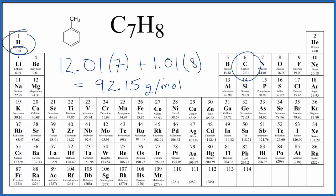What this number means is if we have 92.15 grams of C7H8, that's one mole. Or if we're given one mole, the number of grams in one mole of C7H8, that's going to be 92.15.